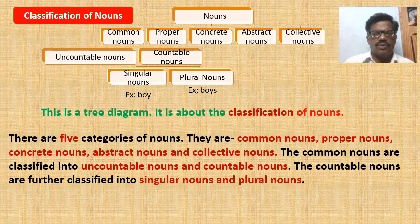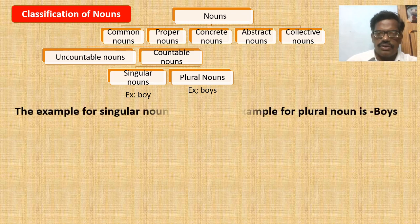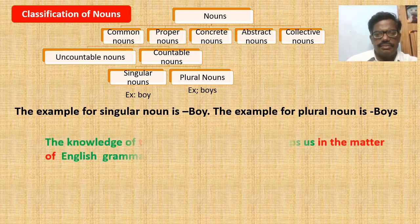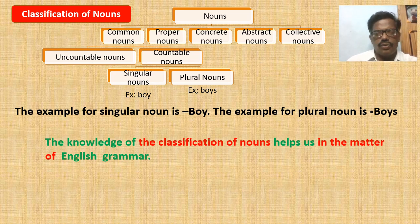In this way we can easily make the students write about the classification of nouns. We can also write about examples: the example for singular noun is 'boy,' and the example for plural noun is 'boys.' Now we can also give a concluding sentence. In conclusion, we can write: 'The knowledge of the classification of nouns helps us in the matter of English grammar.' The children may come out with their own conclusion.